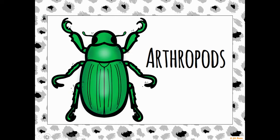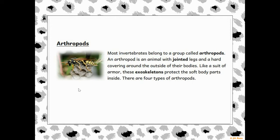The first group of invertebrates we're going to talk about are called arthropods. Most invertebrates belong to this group — it's the biggest group of invertebrates. An arthropod is an animal with jointed legs and a hard covering around the outside of their body.